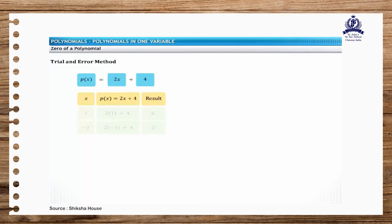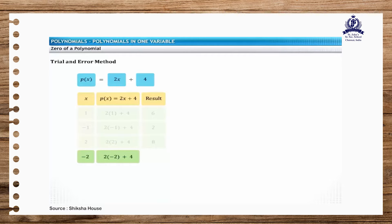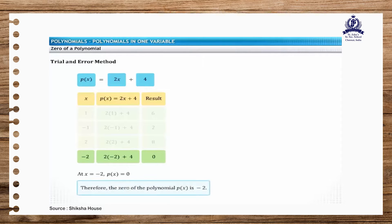Try using another value, 2, as the value of x. The value of the polynomial is 8, which is again not equal to 0. In the fourth try, you use minus 2 as the value of x. You will find that the value of the polynomial is 0. Thus, using the trial and error method, you can determine that the zero of the given polynomial is minus 2.